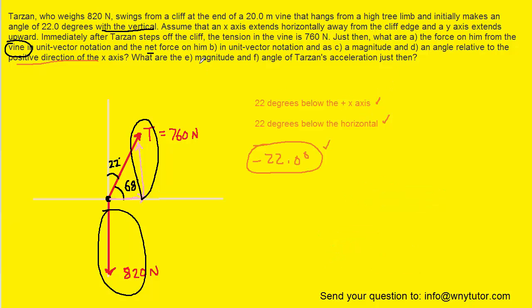For part E we're being asked to find the magnitude of the acceleration. We know that the magnitude of acceleration would be the magnitude of the net force divided by the mass. And we already found the magnitude of the net force to be approximately 307 newtons. And then the mass of Tarzan actually was not stated.